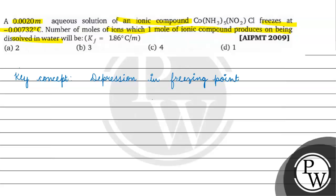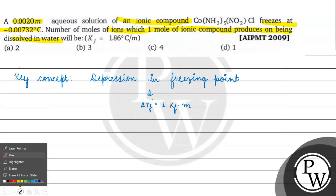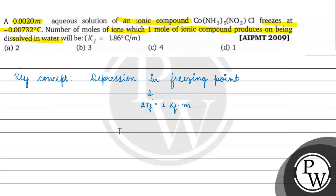The formula we need is: delta Tf equals i — which is the van't Hoff factor — into Kf into m. So, tf naught minus tf equals i into Kf into molality.